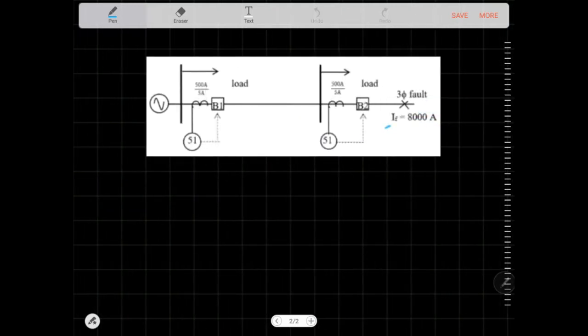Here, we have a fault. It says here there's a three-phase fault. The fault current is about 8,000 amps. And it's at this point. So, we assume that the fault is going to the ground. Is it a ground fault?